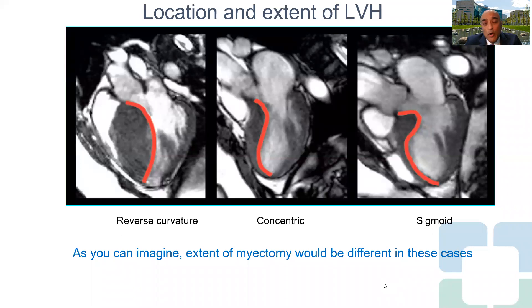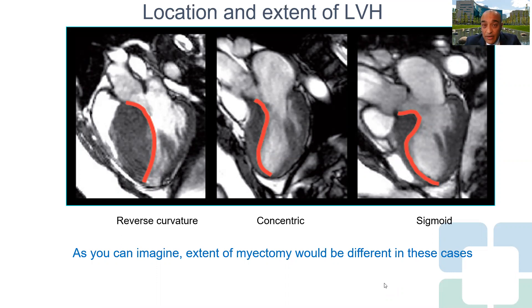CMR can also provide complementary value to echocardiography in terms of the extent and location of LVH. These three patients all have basal septal hypertrophy; however, most of us would realize they are different, and the extent of surgical myectomy would be very different in these three patients.